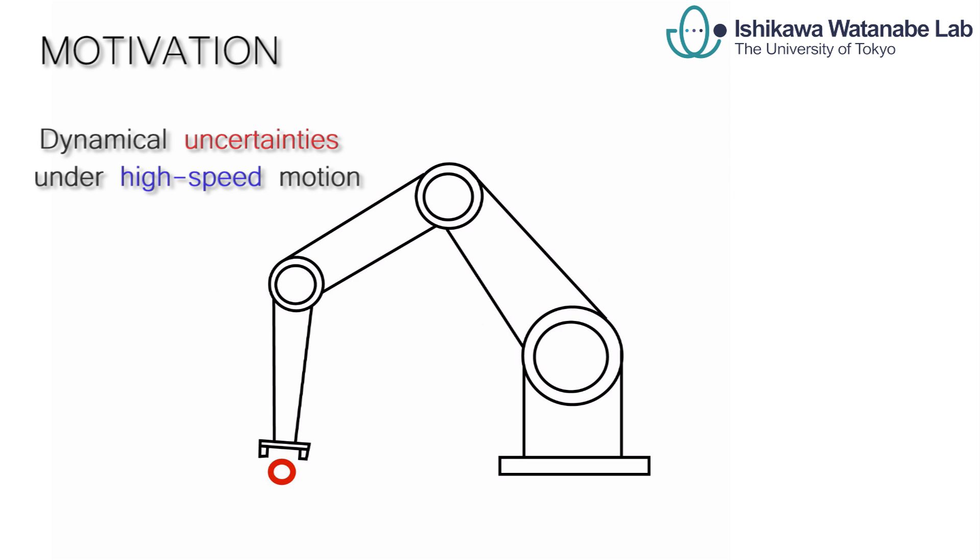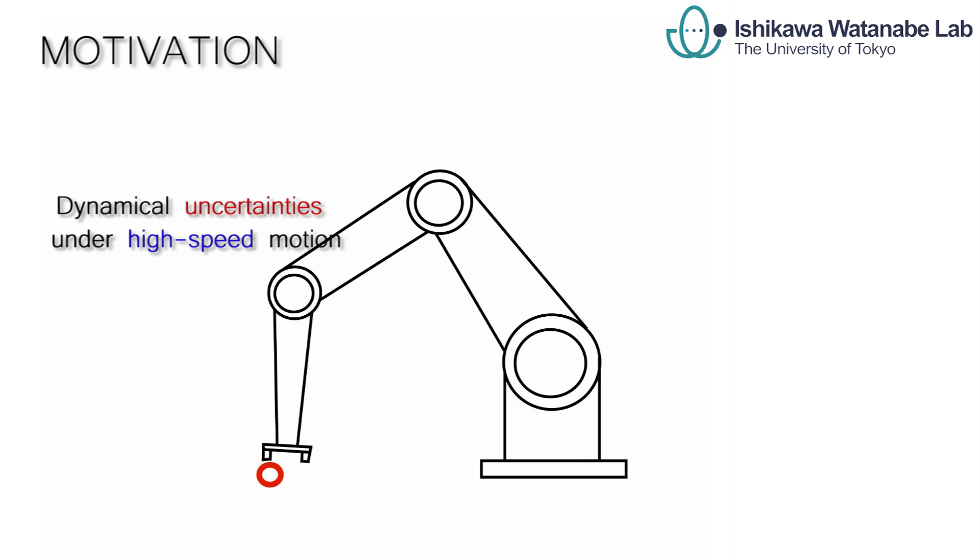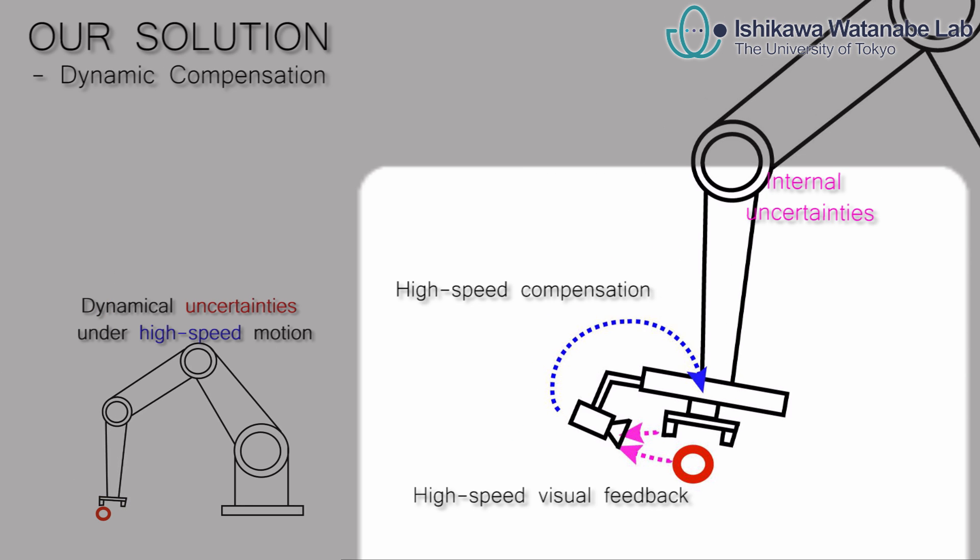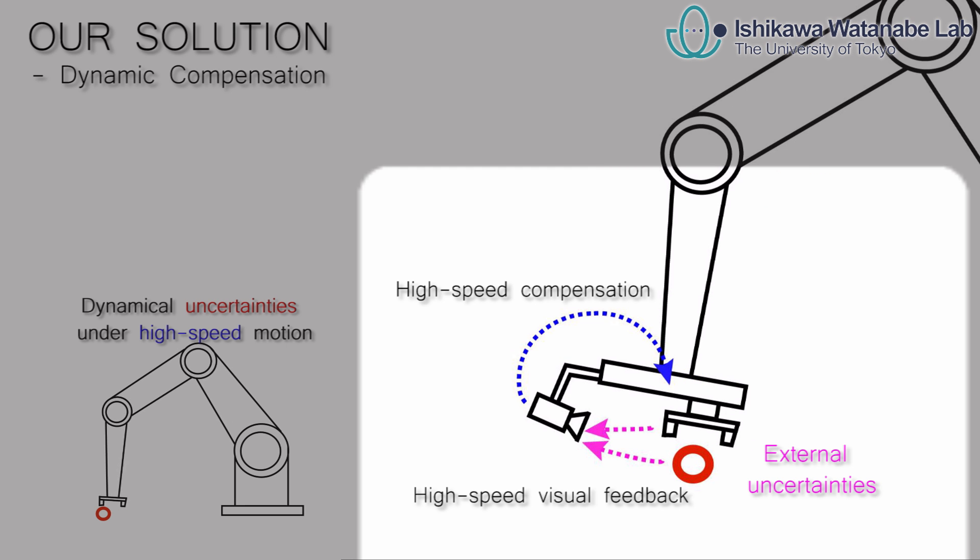Traditionally, it is difficult for industrial robots to achieve high-speed motion with high accuracy. We present a solution using dynamic compensation by adopting high-speed vision and compensation actuators to compensate for the uncertainties caused by the system itself as well as the external environment.